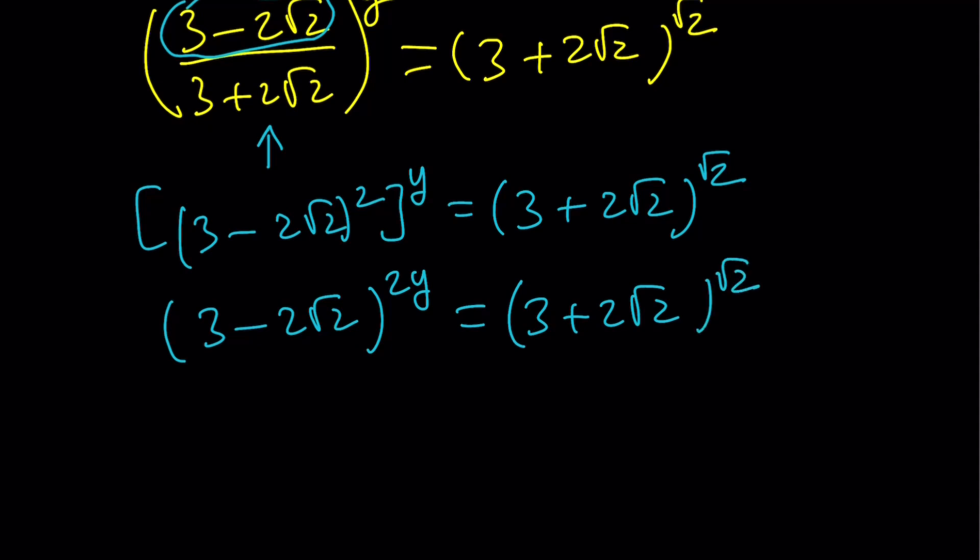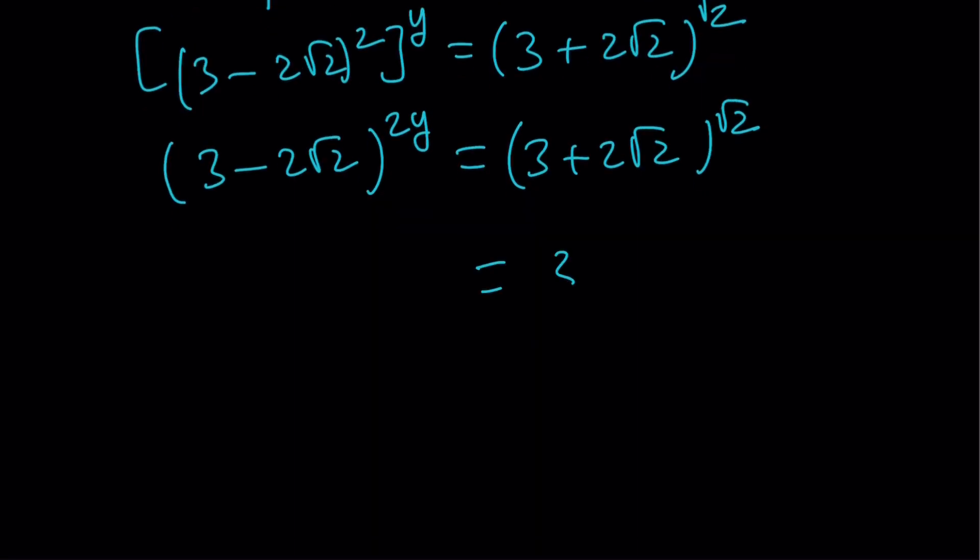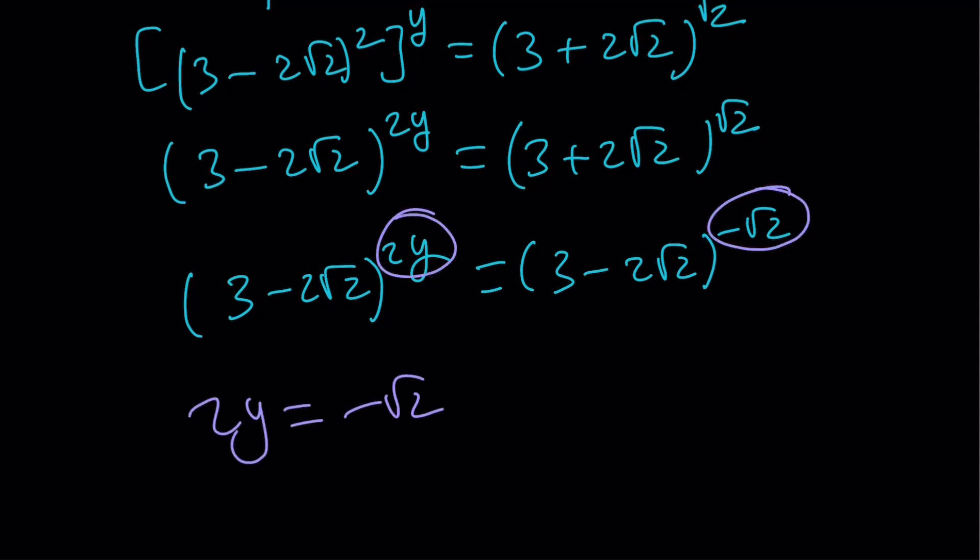What's the relationship between the bases? We know they are reciprocals. So we can write this one as (3-2√2)^(-√2). Then they'll have the same base. And then I can just set the exponents equal. So 2y = -√2. Y = -√2/2.